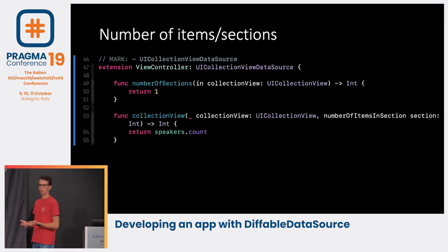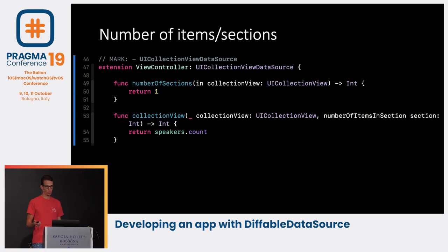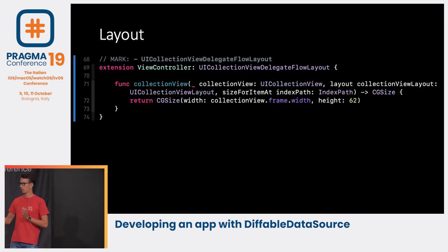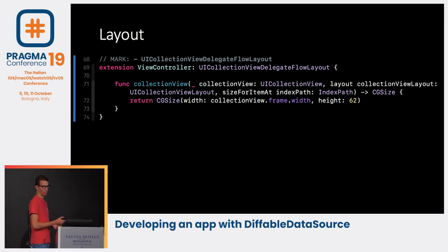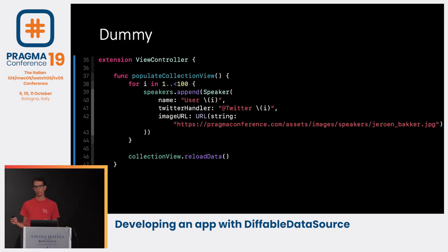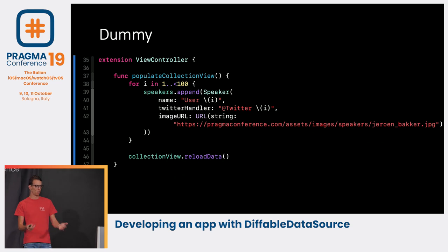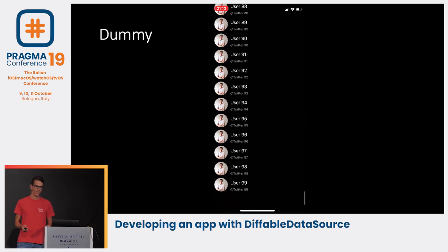We also need to specify our number of sections — the default is one but I implemented it explicitly. We return the count of our speakers array. For layout, I give the cell the full collection view width and a static height of 62. With some dummy data populated — normally via a network call, mapped to a Speaker — we now have a nice-looking app that can scroll through around 100 users.